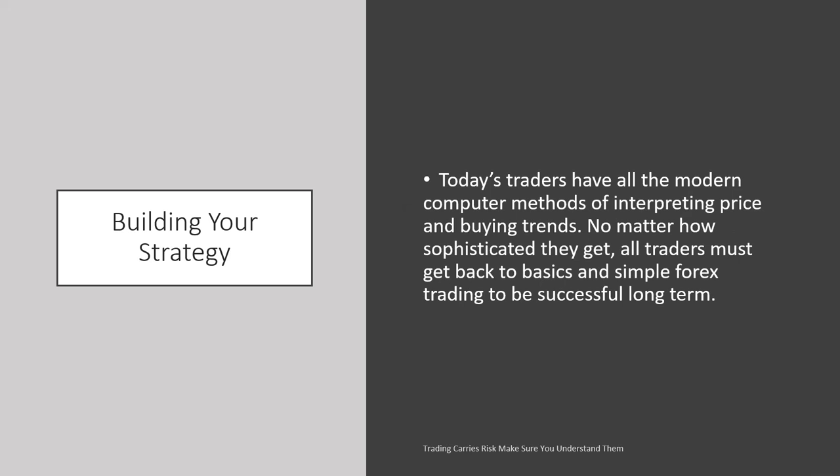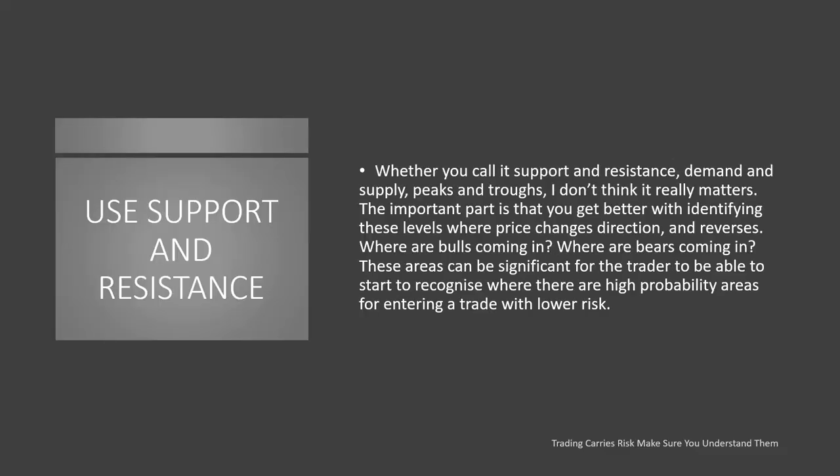Today, traders have all the modern computer methods of interpreting price and buying trends. But no matter how sophisticated you get, all traders must get back to the basics to be successful in the long term. My first rule of thumb in my triple header strategy is support and resistance. Whether you call it support and resistance, demand and supply, or peaks and troughs, the important part is getting better at identifying levels where price changes direction and reverses — where do the bulls come in, where do the bears come in? These areas are significant for entering a trade at lower risk.